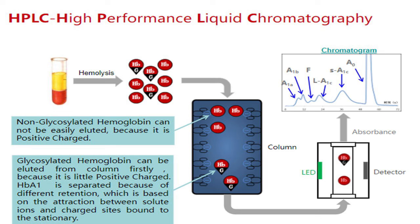In the HPLC method for HbA1c detection, various types of hemoglobin are loaded onto an analytical column. Non-glycosylated hemoglobin cannot be eluted easily because it is more positively charged compared to glycohemoglobin molecules. Glycosylated hemoglobin can be more easily eluted from the analytical column because it carries a lesser positive charge. Glycated hemoglobin and other hemoglobin components are thereby separated according to their different electrical charges.